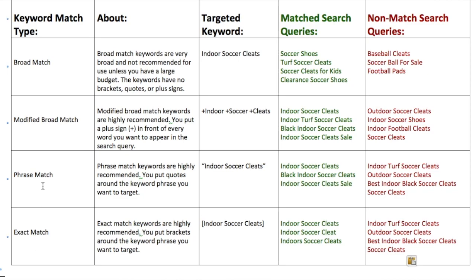We definitely recommend using a mix of modified broad match, phrase, and exact in your campaigns. For modified broad match, you put a plus sign in front of every word that must appear in the search query. So for +indoor +soccer +cleats, any search query including all three words would match — indoor turf soccer cleats, black indoor soccer cleats, indoor soccer cleats sale. But if someone searches outdoor soccer cleats, indoor soccer shoes, or indoor football cleats, it won't match because not all required words are present. Put a plus sign in front of every word that must appear.